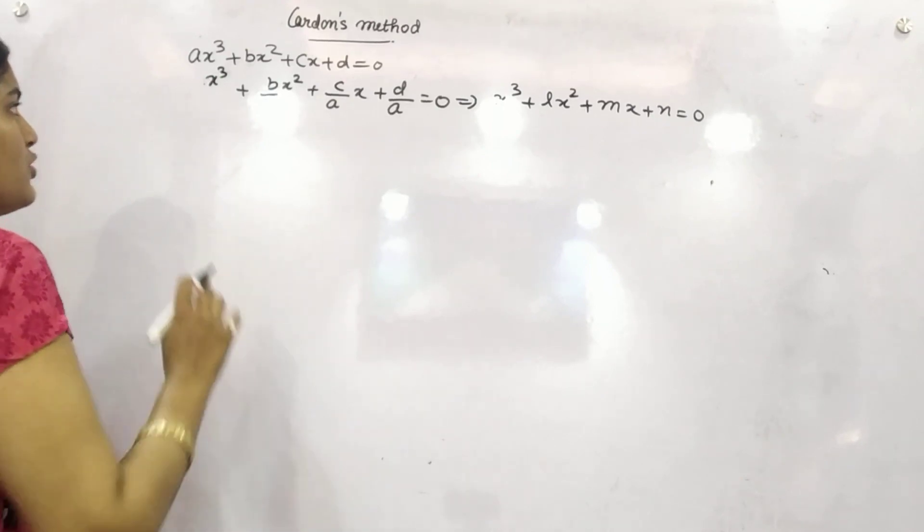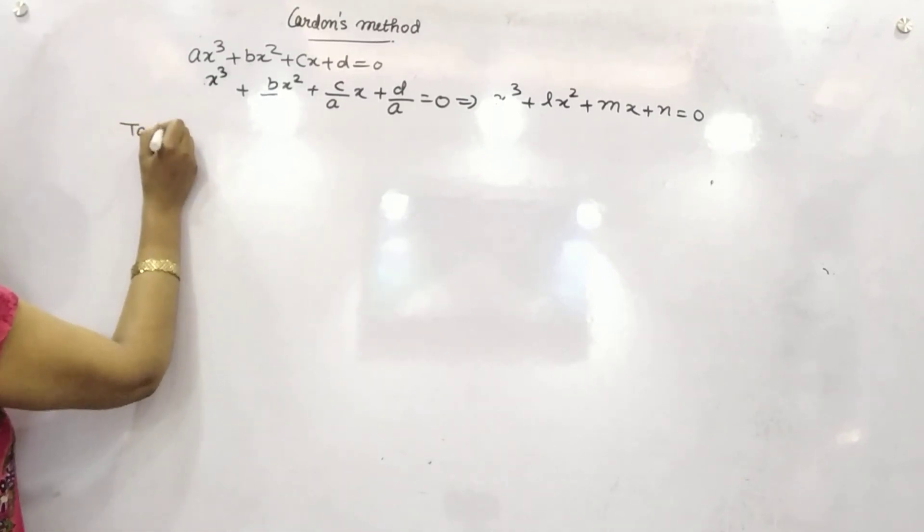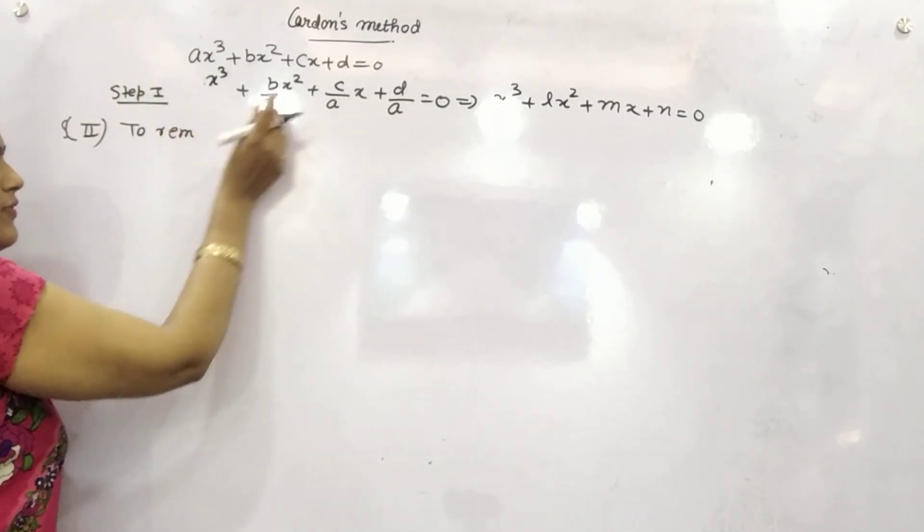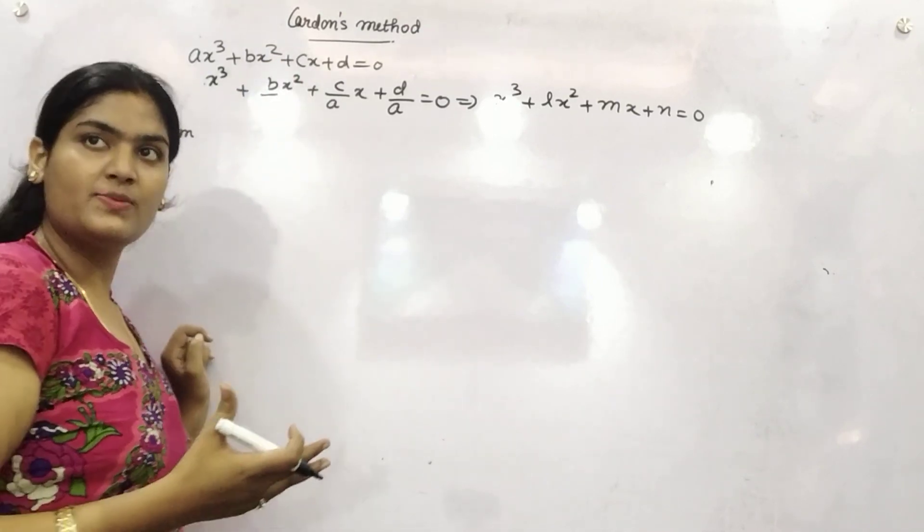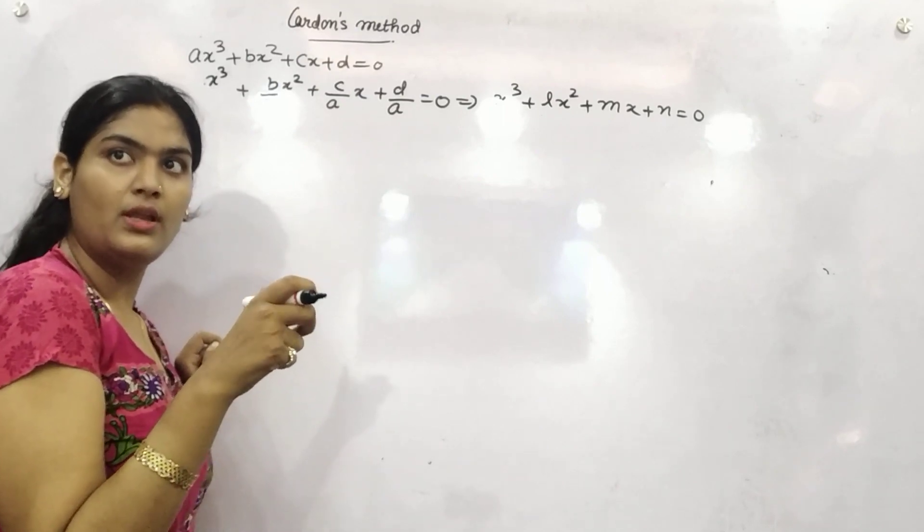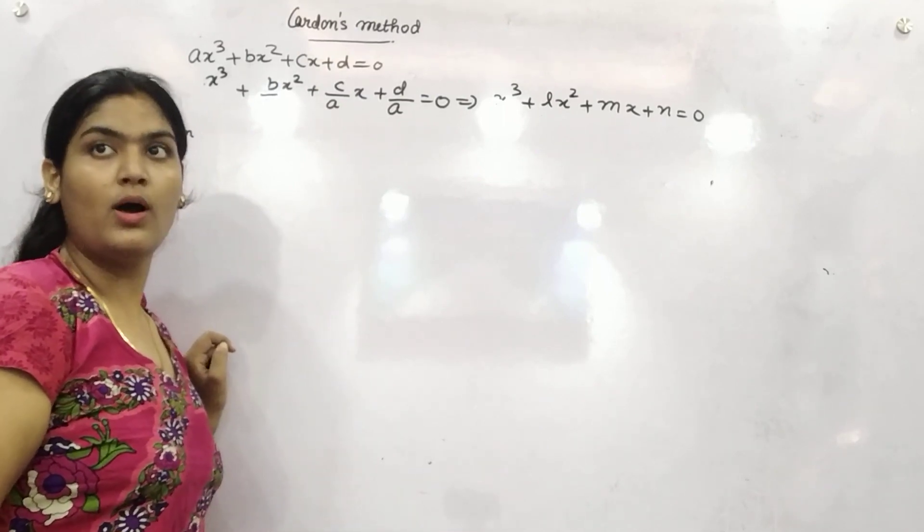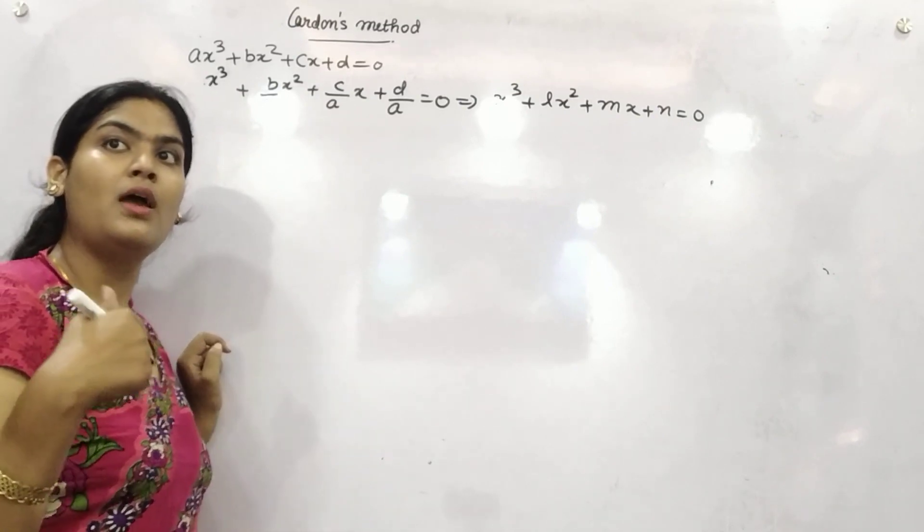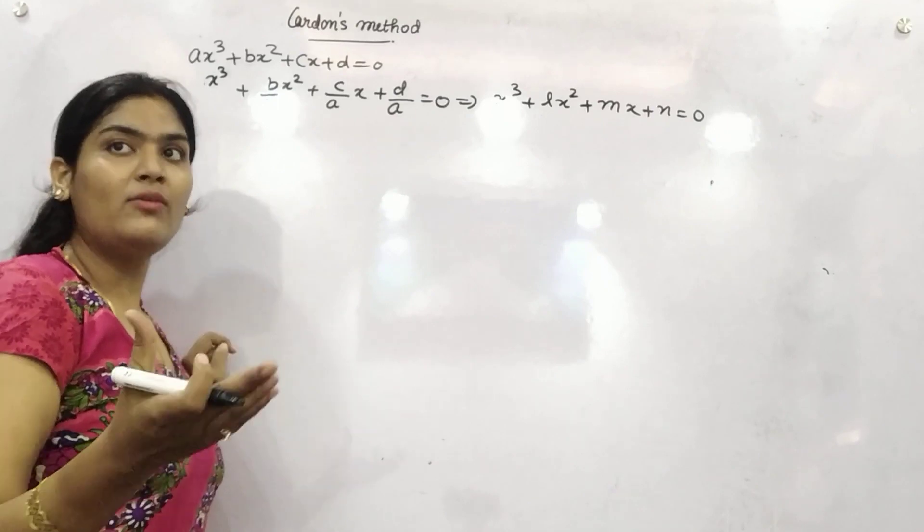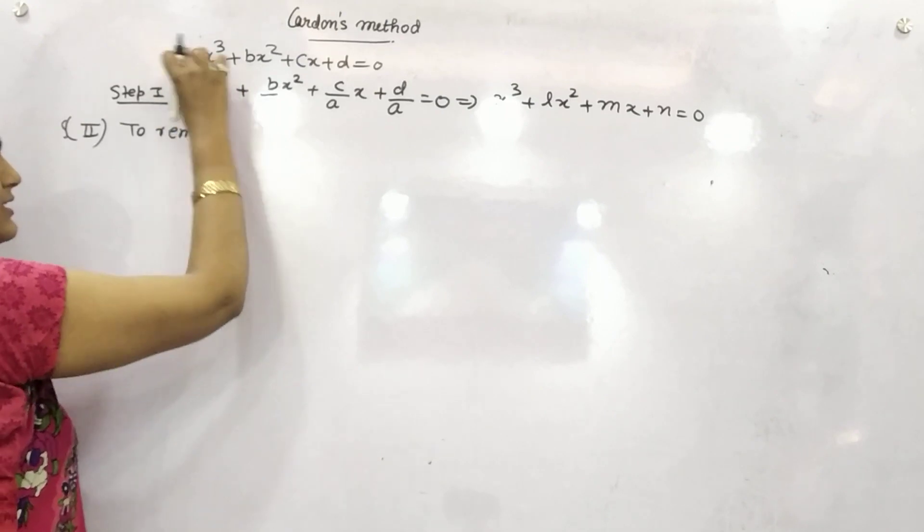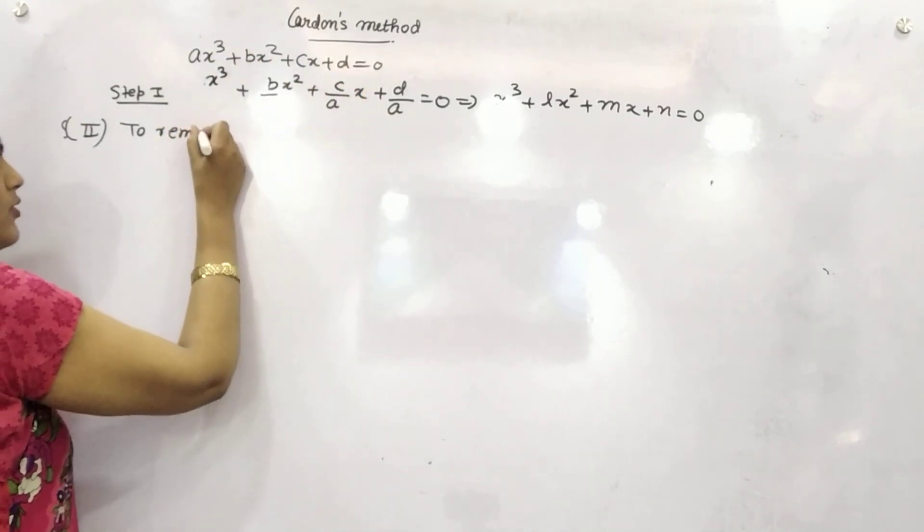Now your next step is to remove, this is your step 1. Your next step is to remove - basically what we are going to do in Cardin's method, you need to transform a cubic equation into a quadratic equation and thereafter we know how to solve a quadratic equation by using splitting the term method or quadratic formula. Whatever the means are, but first of all this is your general form, cubic, then to remove